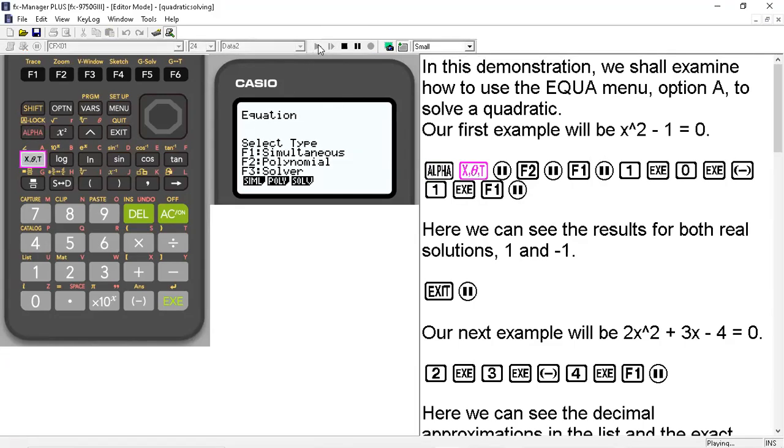We'll hit alpha and the variable key, and that will take us to this screen here where we can select simultaneous equations, polynomial equations, or some kind of solver. In this case, we're going to select poly, so we're going to select F2.